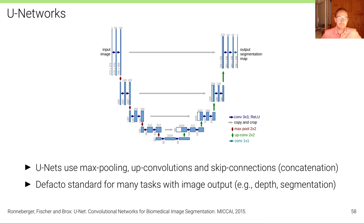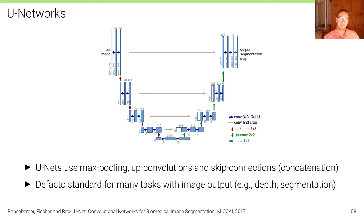Another model also from 2015 is U-Net — very simple, with similar ideas and one of the standard architectures. It has an encoder, a decoder, and skip connections, but here the skip connections concatenate features from the same resolution in the encoder with the upsampled predictions from the decoder stage. This makes it one of the de facto standard architectures for many tasks with image-level outputs such as depth estimation or segmentation.